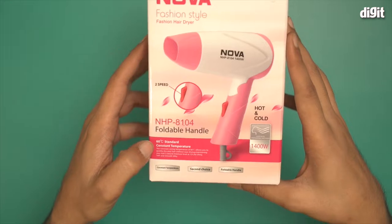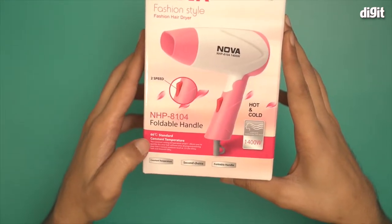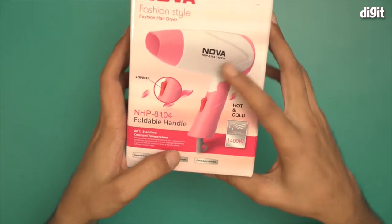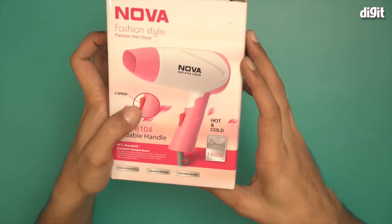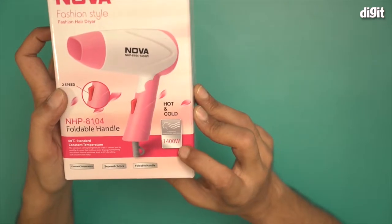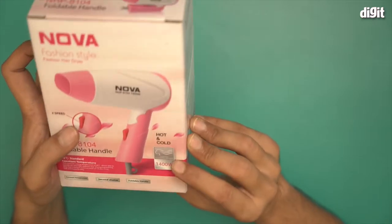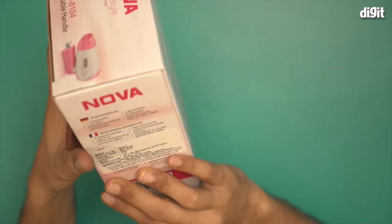There's some information written here: 60 degrees standard constant temperature, comes with a foldable handle, and there are two speed settings. This is a 1400 watt hairdryer. It comes with super mute professional hairdryer technology.